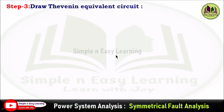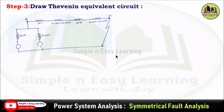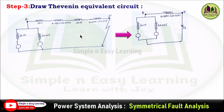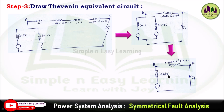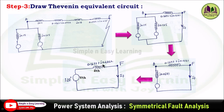Step 3: draw the Thevenin equivalent circuit by simplifying the reactance diagram. From point A to F, all reactances are in series and can be added directly. Generator 1 and generator 2 reactances are in parallel: j0.15 parallel with j0.125 gives j0.0681 per unit. Adding all series elements from A to F gives Z_Thevenin = 0.1672 + j0.4822 per unit.